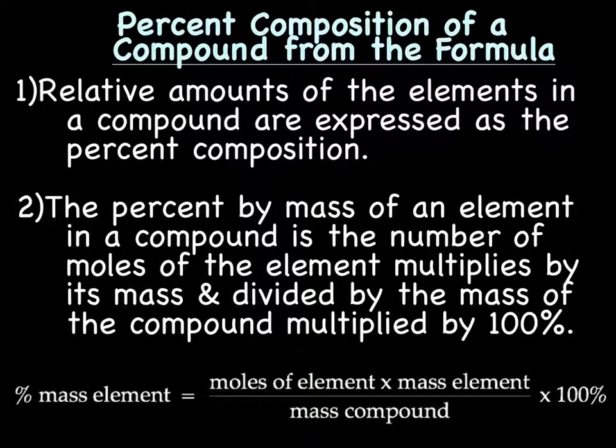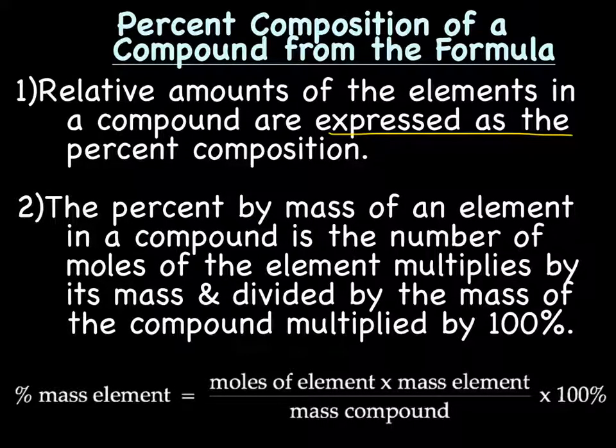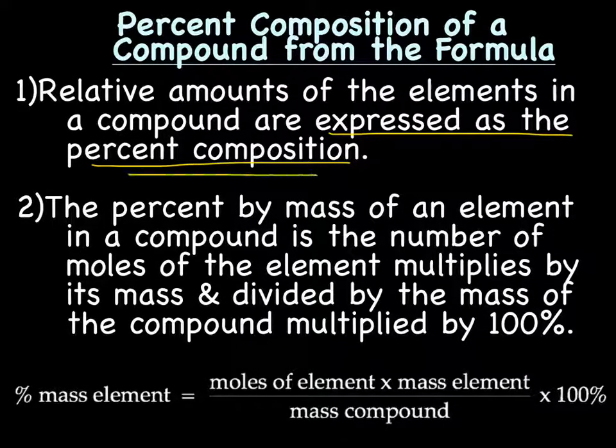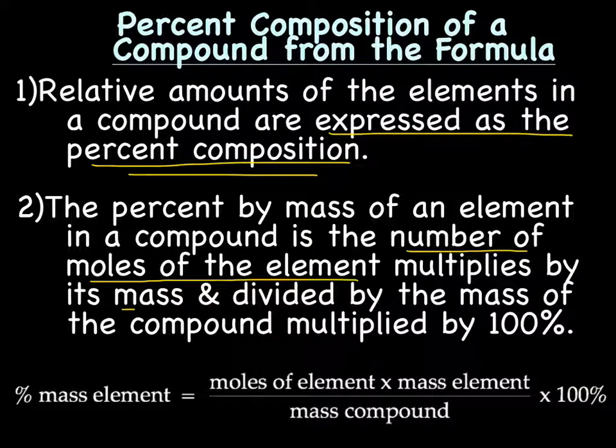Percent composition of a compound from the formula. Relative amounts of elements in a compound are expressed as percent composition. The percent by mass of an element in a compound is the number of moles of the element multiplied by its mass and divided by the mass of the compound and multiplied by a hundred.